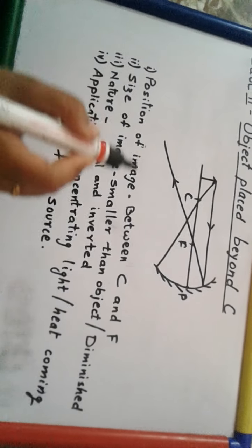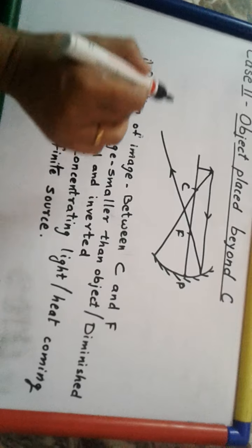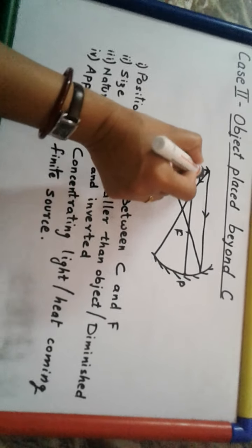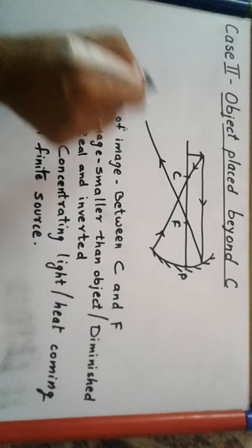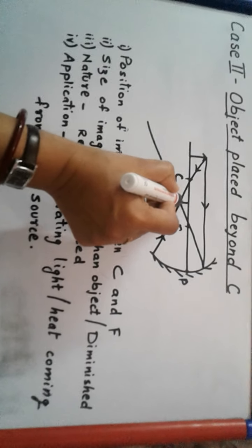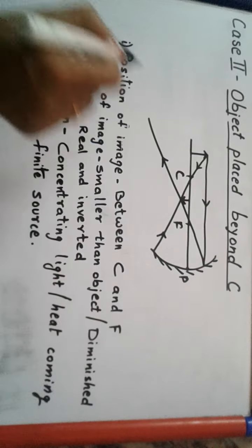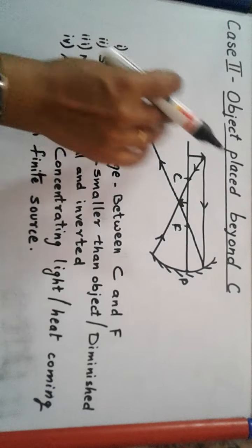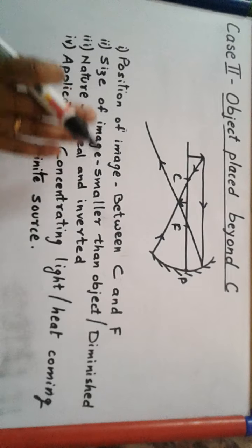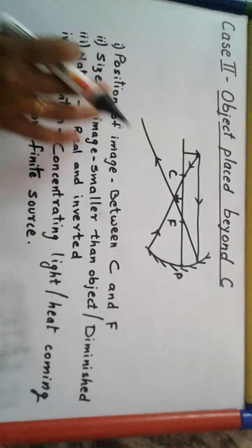The second ray is passed through the center of curvature. And as you can see, if this is the incident ray, then after reflection it will retrace its path backward. Again, both rays meet between C and F, and the image which is formed is smaller than the object. So everywhere, whichever point you choose, the image position will remain the same.